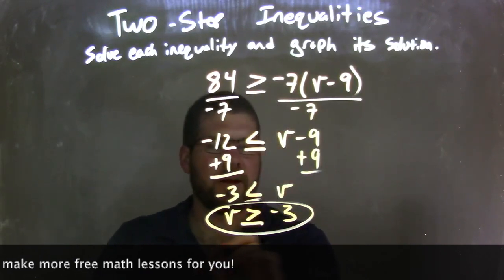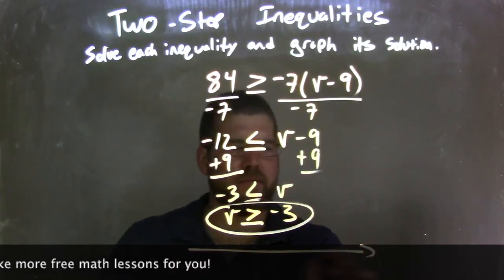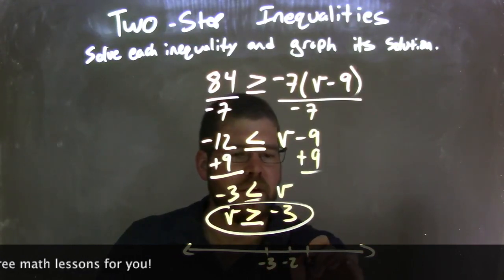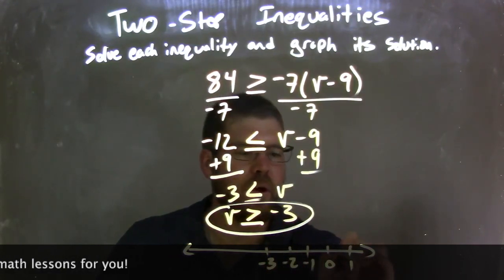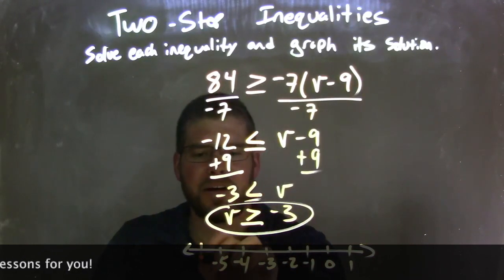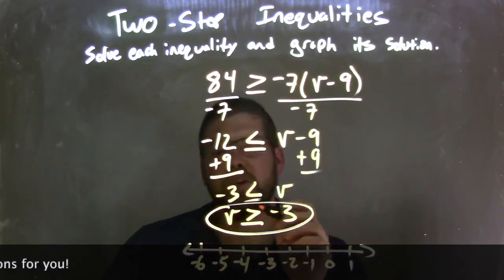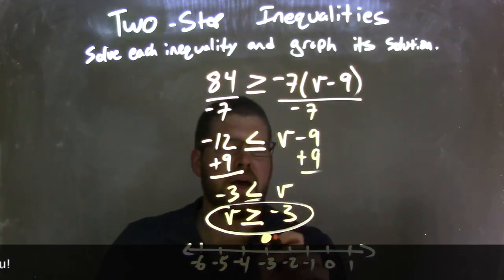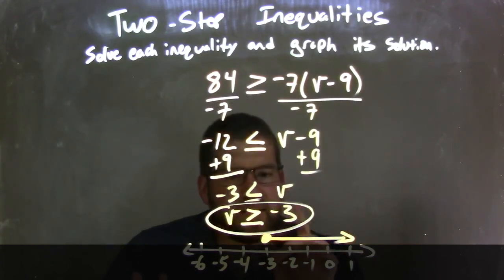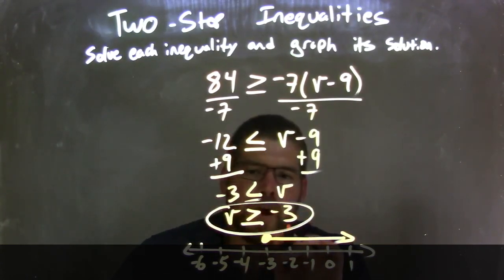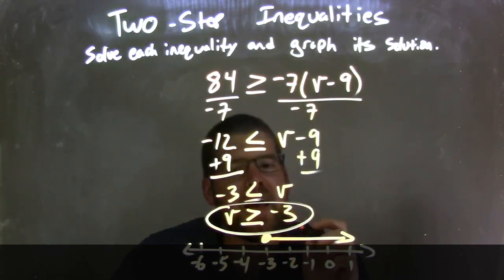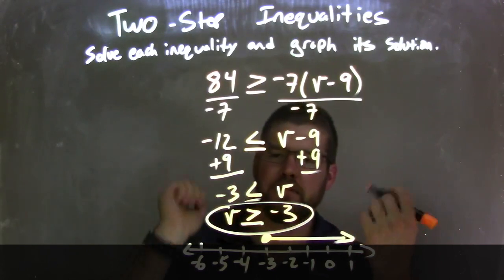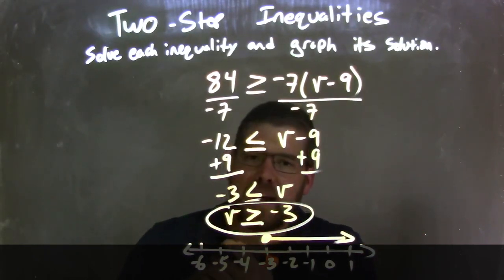So v is greater than or equal to negative 3. Now I need to graph it. Going by 1s: negative 3, negative 2, negative 1, 0, 1, and negative 4, negative 5, negative 6. Since v is greater than or equal to negative 3, I put a closed circle at negative 3, then put my arrow to the right. The graph shows all the values v can be — greater than negative 3, as well as equal to negative 3 due to the closed circle. Our graph matches the final answer: v is greater than or equal to negative 3.